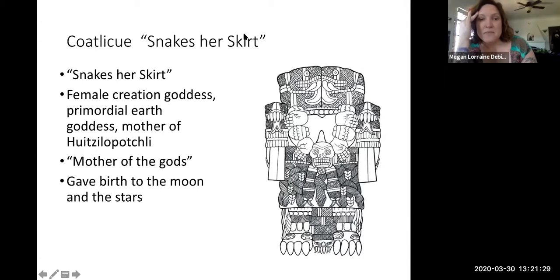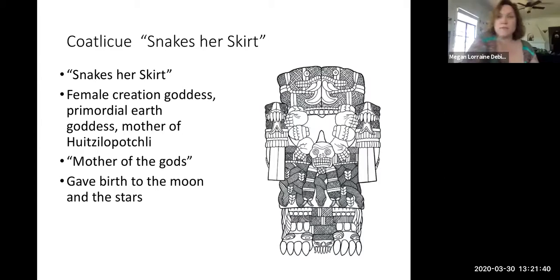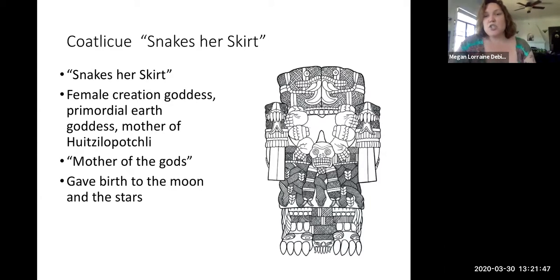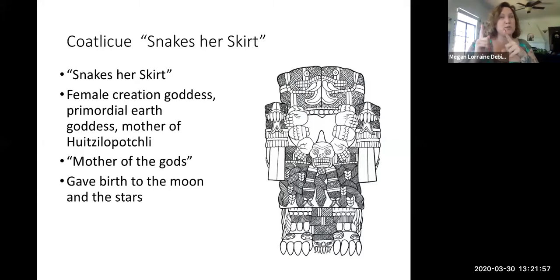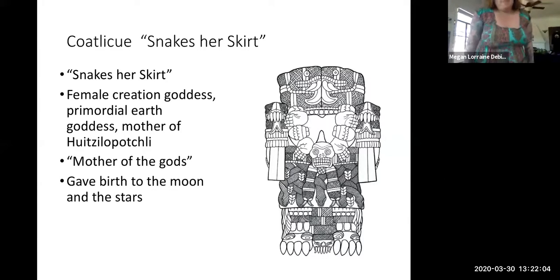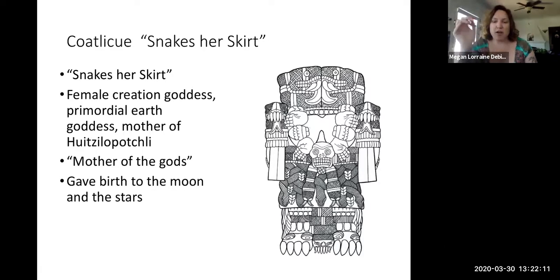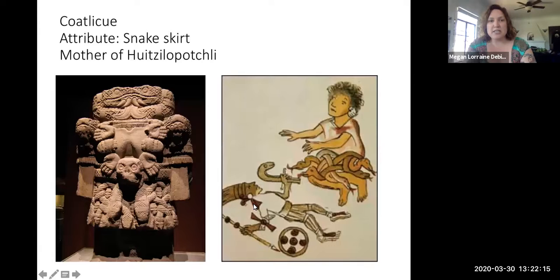Coatlicue is the 'lady snakes her skirt' — she's got a skirt made out of snakes. She's a creative goddess, an earth goddess, and she's the mother of Huitzilopochtli. Because she's the mother of Huitzilopochtli — the main Mexica tribal deity — she's sort of the mother of all the gods. There's a really important story from Mexica mythology that I'll need to tell you so that you can understand Coatlicue, Huitzilopochtli, and Coyolxauhqui.